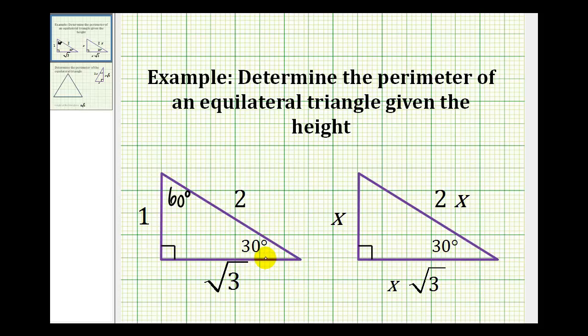We normally label the sides of a 30-60-90 triangle as one, two, and square root of three because the ratio of the sides stay constant. But we know that a 30-60-90 triangle can be any multiple of this triangle on the left. So if we multiply each side by x, we have x as the shortest leg, 2x for the hypotenuse, and x square root three as the longer leg.